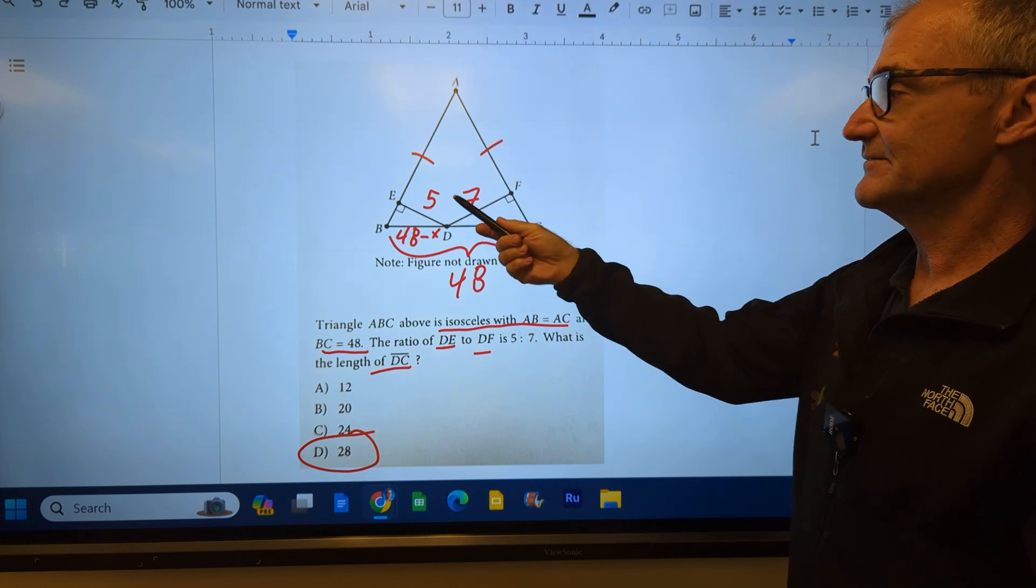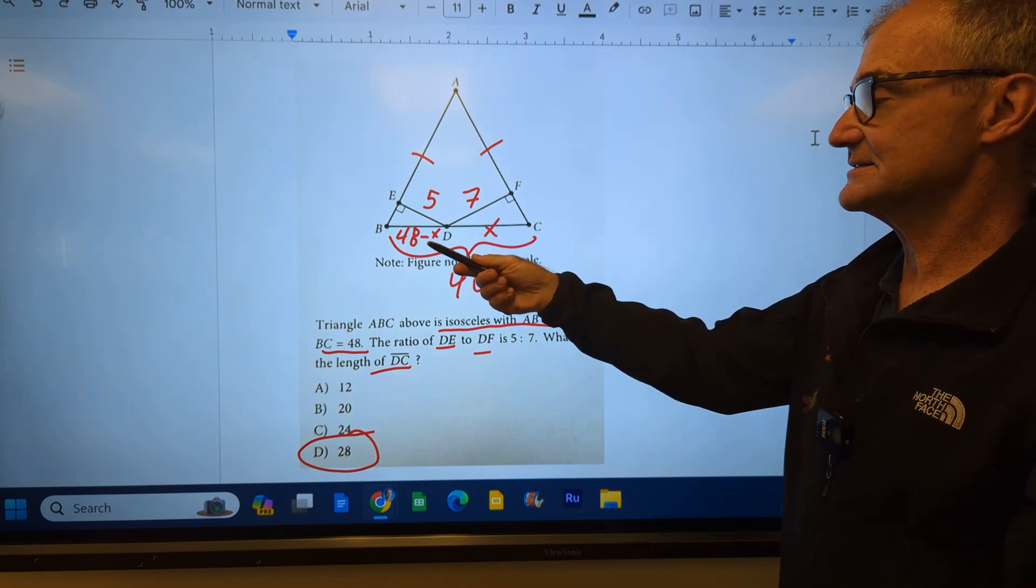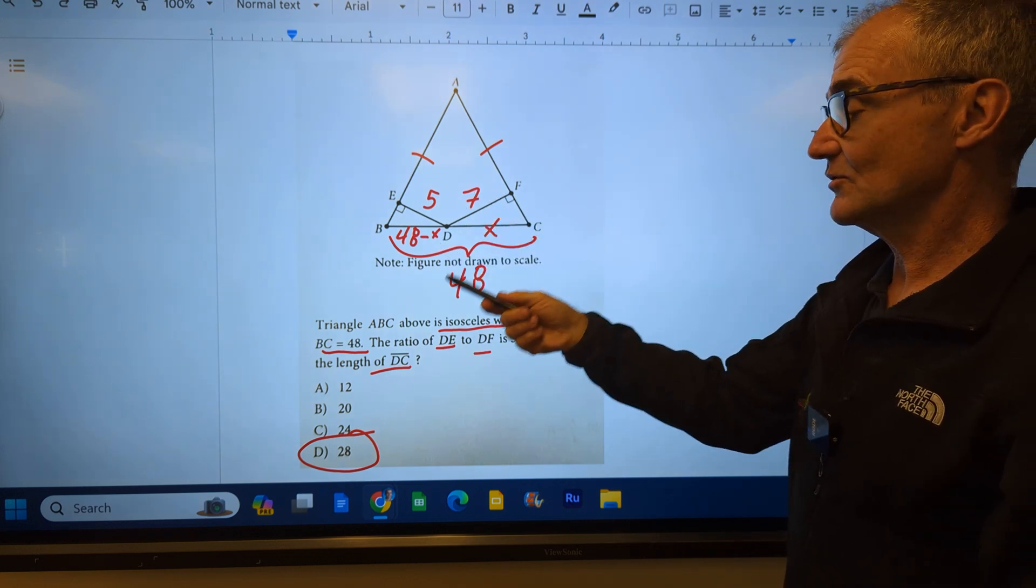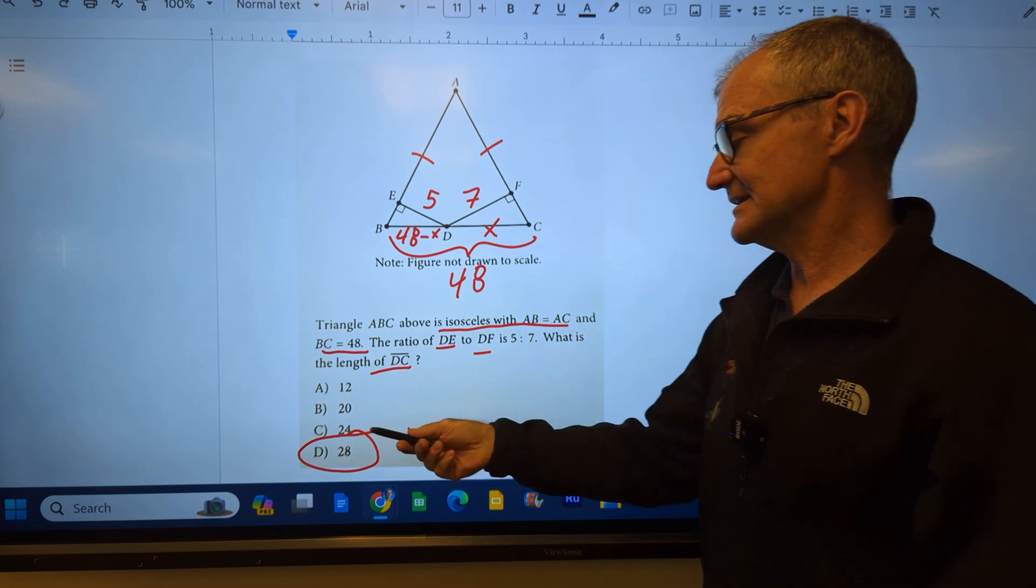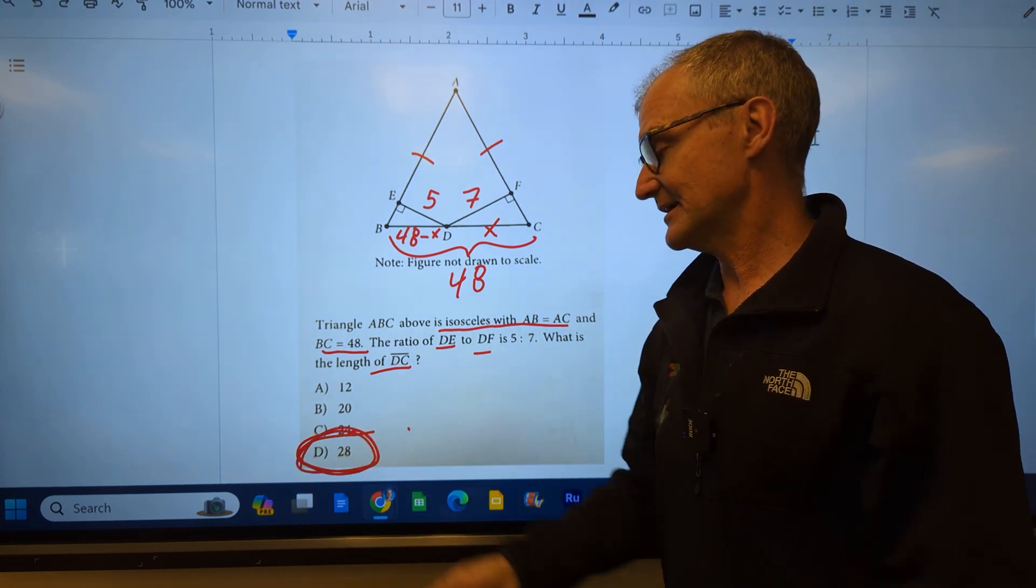So you could set up a proportion, 5 is to 48 minus X as 7 is to X. Or you could just skip right to the answers and see that there's only one answer that'll work.